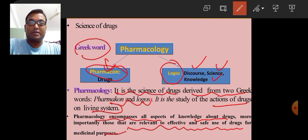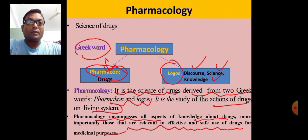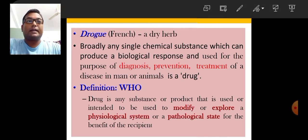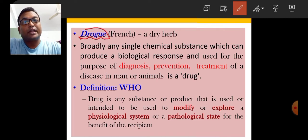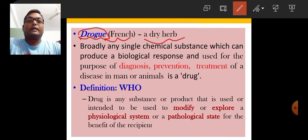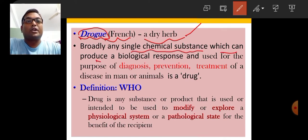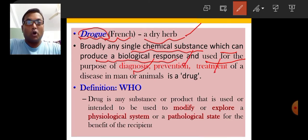In pharmacology we study about drugs, so what do we mean by drugs? Drug is basically a French word 'drogue,' meaning dry herb. In ancient India, herbs were also considered as drugs. Broadly, any single chemical substance which can produce a biological response and is used for the diagnosis, prevention, and treatment of a disease in man or animal is a drug.